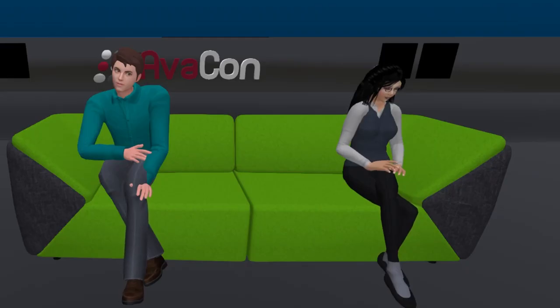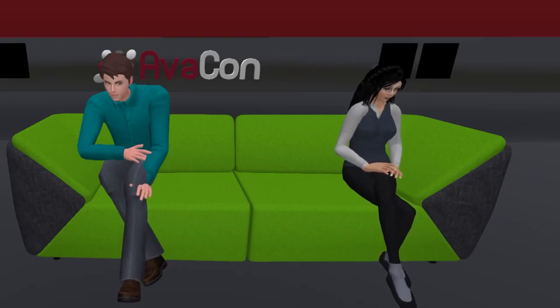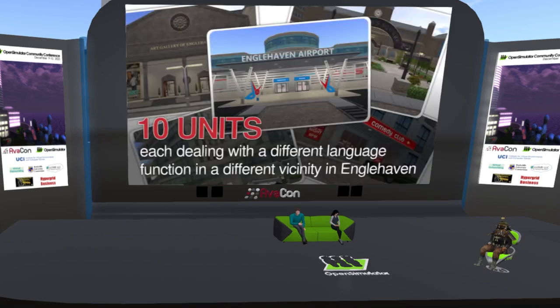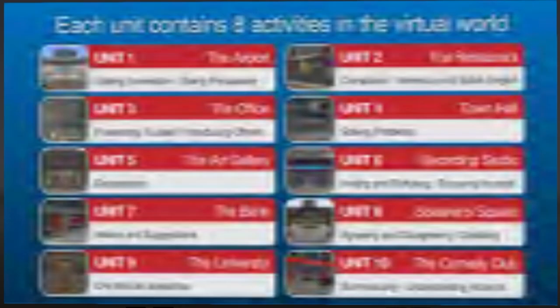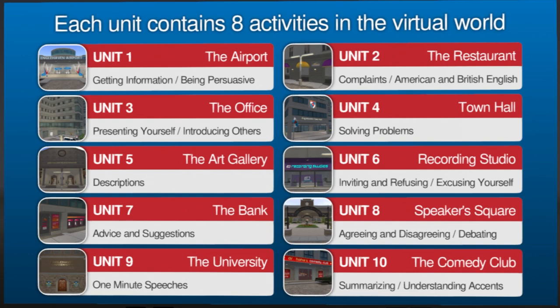Let's show you what we've done. The course has 10 units. Each unit deals with a different language function — for example, arguing or asking for information — and each one takes place in a different place. It's also part of a larger course where we use AI to learn the vocabulary at the beginning, and then later students come to the virtual world to practice. All different places allow for different vocabulary and language use.